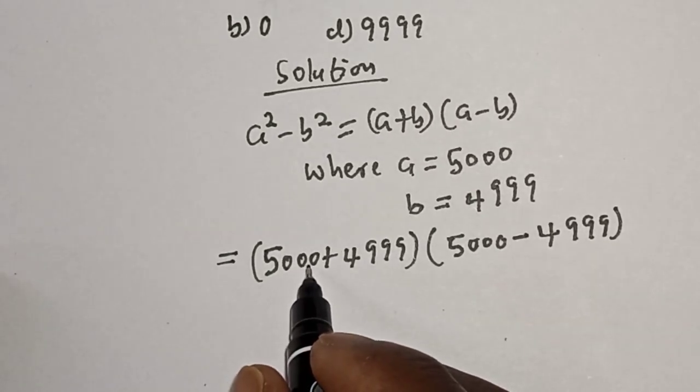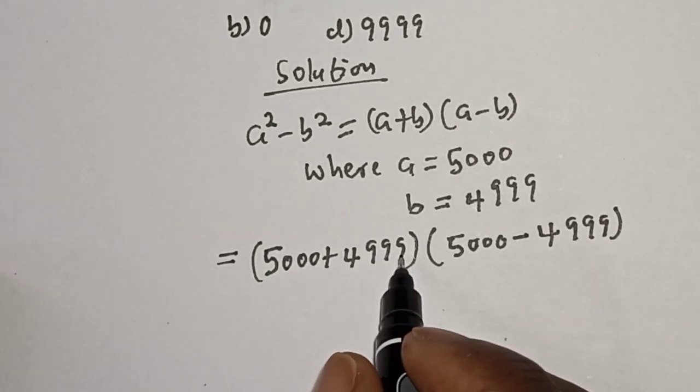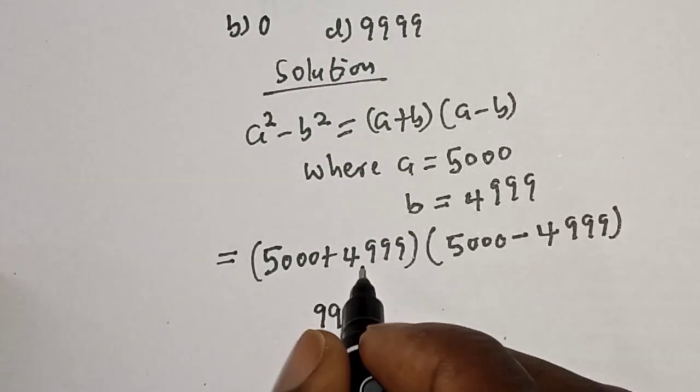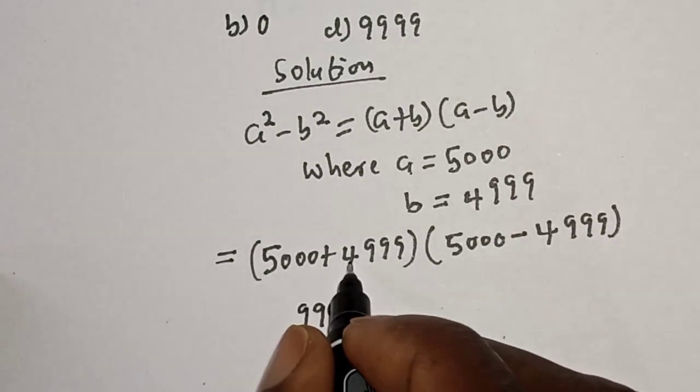Then let's see, 5000 plus 4999: 9 plus 0 is 9, 9 plus 0 is 9, 9 plus 0 is 9, 4 plus 5 is 9. That is 9999.